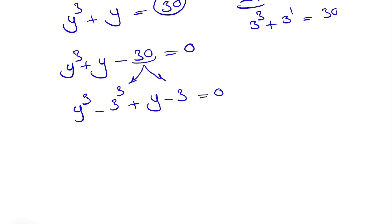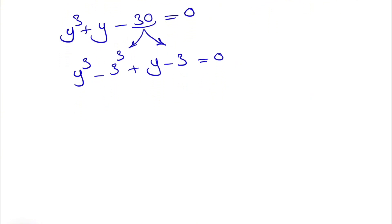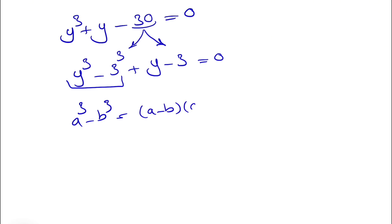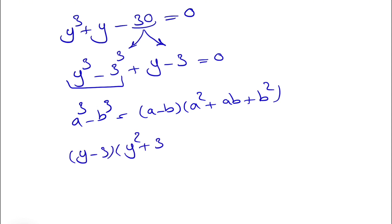We are splitting 30 into minus 3 cubed and minus 3, and we can see this gives us a familiar algebra formula. We have the difference of two cubes: a cubed minus b cubed equals a minus b times a squared plus ab plus b squared. So for that expression, we have y minus 3 times y squared plus 3y plus 9.